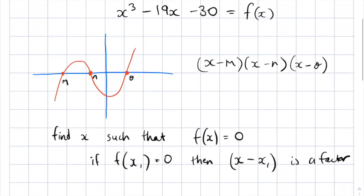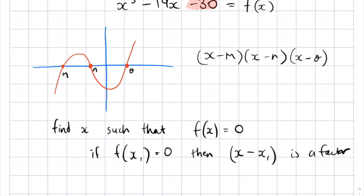To find candidates, I look at the last value in the equation. When the cubic is fully factored, those linear terms multiply together to give that last constant. So I look at factors of negative 30: plus or minus 1, plus or minus 2, plus or minus 3, and so on. Checking f(1) gives 1 cubed minus 19 minus 30, which is clearly not zero, so I move on.